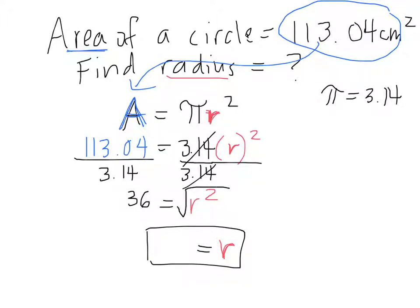The square root of r squared is r. r times r is r squared. Whatever you do to one side, you have to do to the other side. So I take the square root of 36.